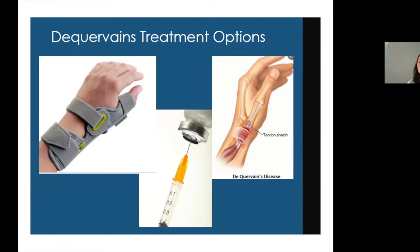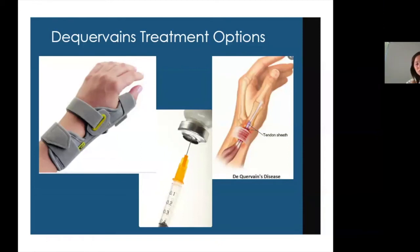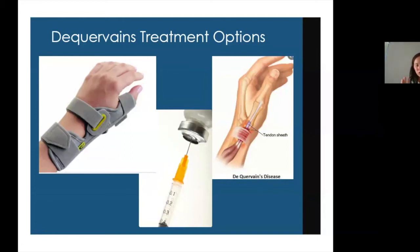Either way, we release the compartments so the tendons are free, then you go home with a soft bandage for about a week and return to normal activity. Usually by about 10 days when I see patients back in the office, they start working on regaining motion and strength. By six weeks, usually you're in a great place where you forget you had surgery.